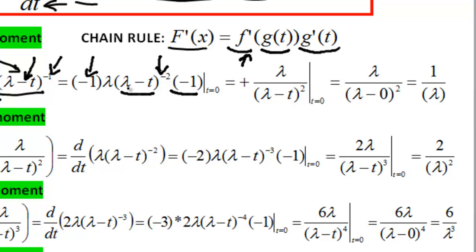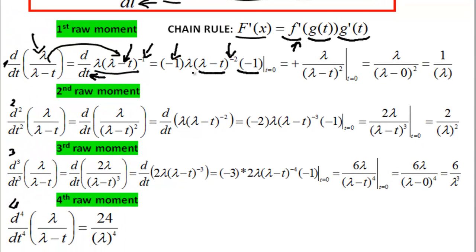Now the derivative of what's inside, we differentiate with respect to t, so this lambda is going to be zero because it's a constant, so we are just left with minus one. We still have to evaluate at t equals zero. So when we replace t here with zero, lambda here will cross out with one power here and this is going to give you one over lambda. So this is our first moment.